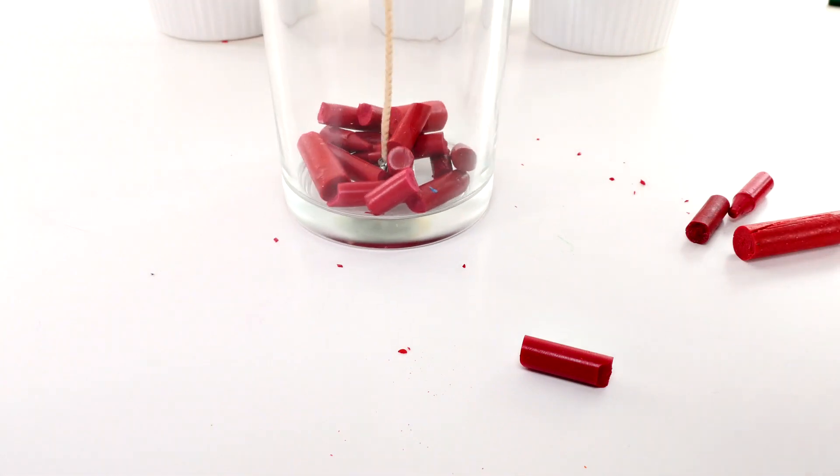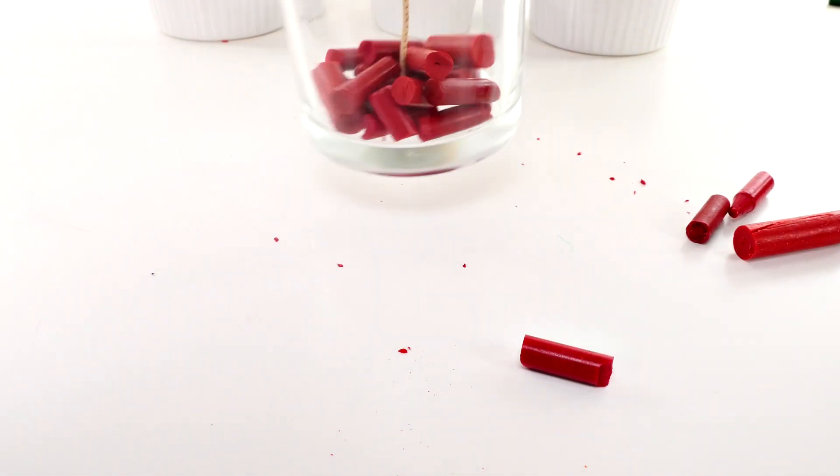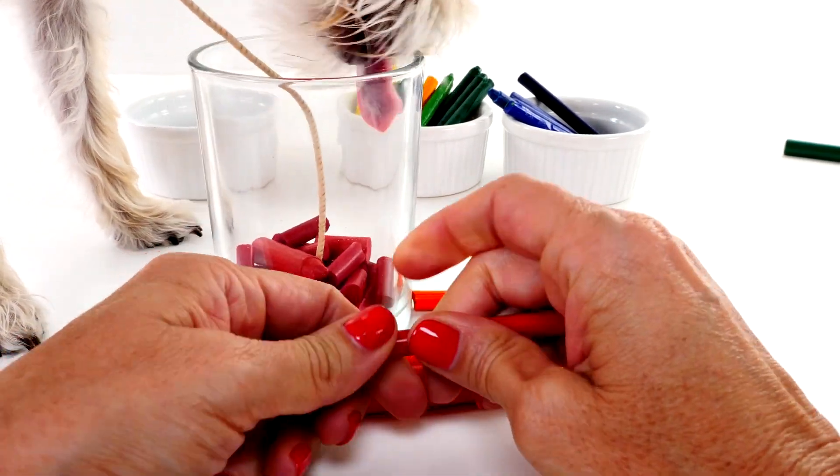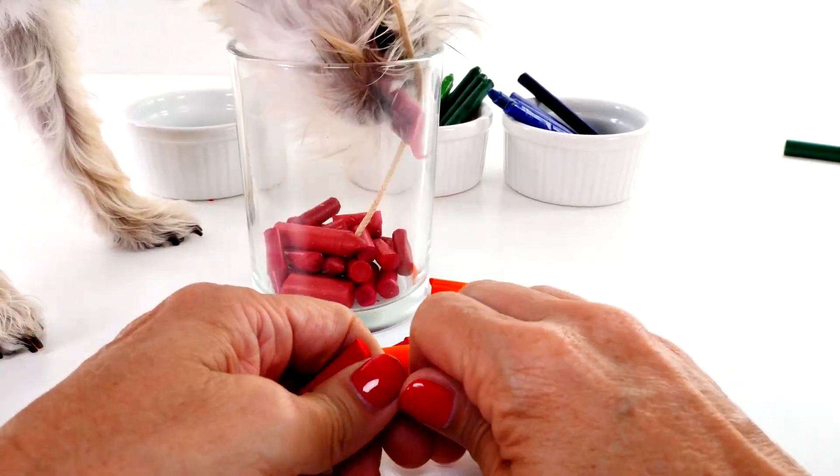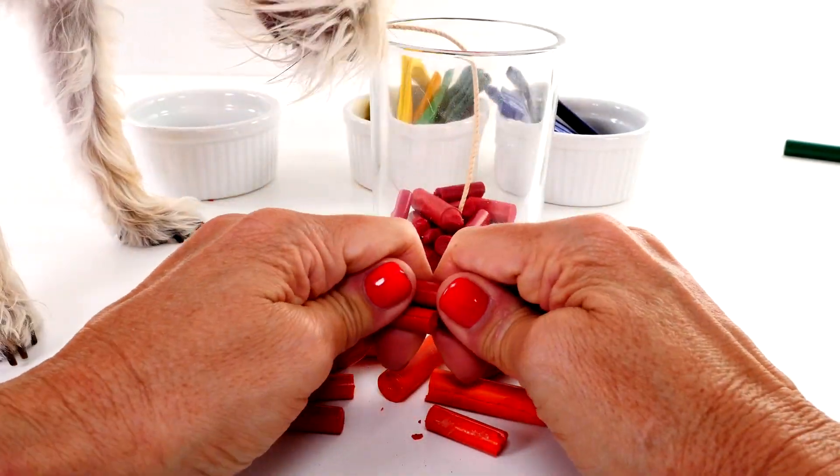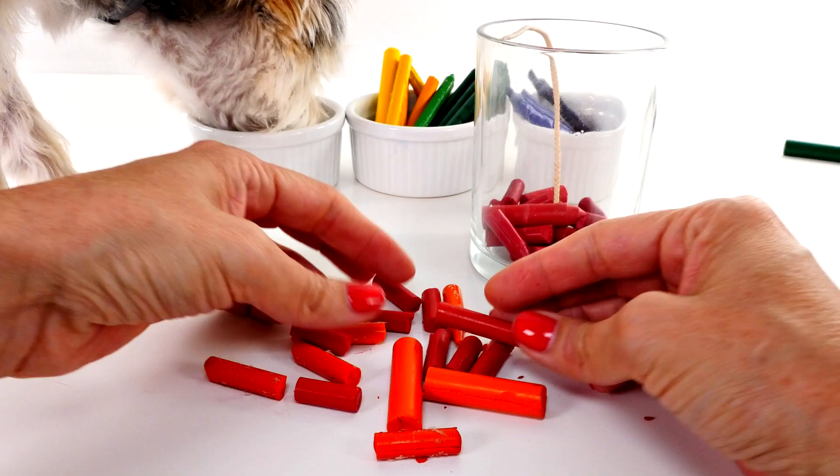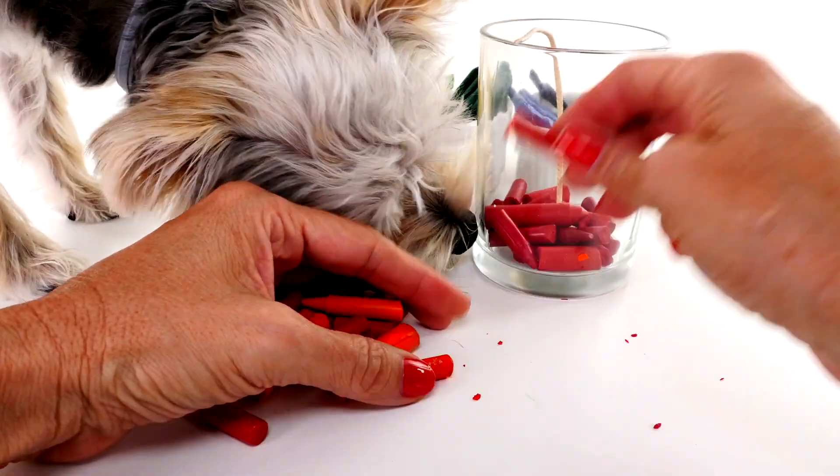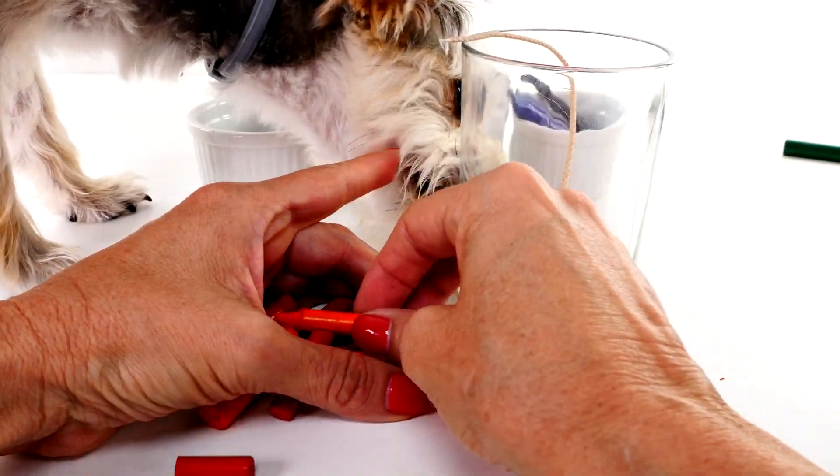The first layer of our rainbow candle: red. Zoomy's back. Oh, that's not good, Zoomy. Okay, so I have some dark and light orange and I'm going to put the dark in first and then the lighter.